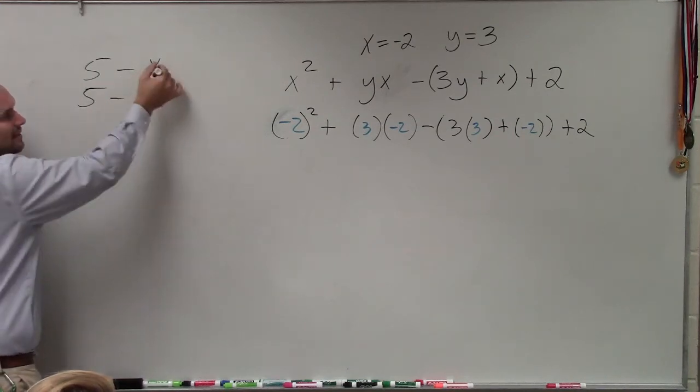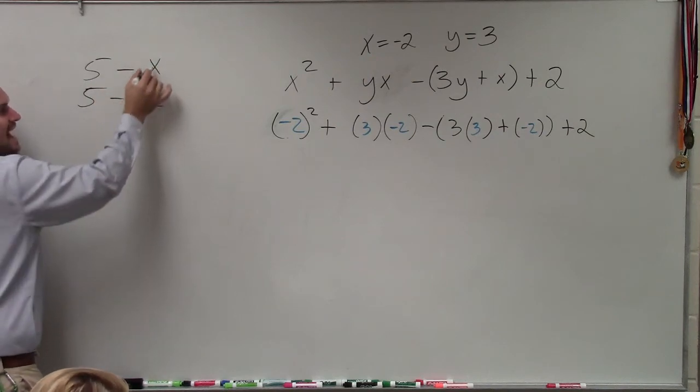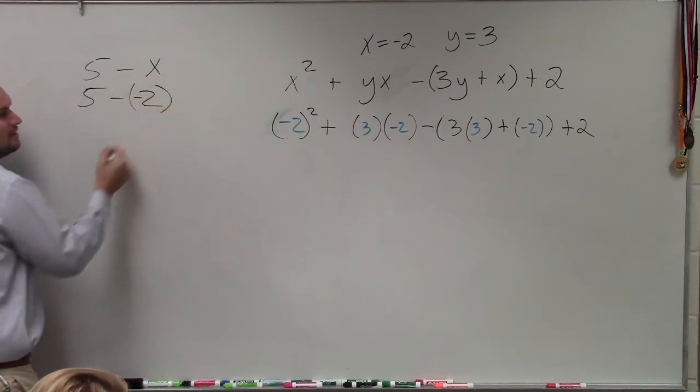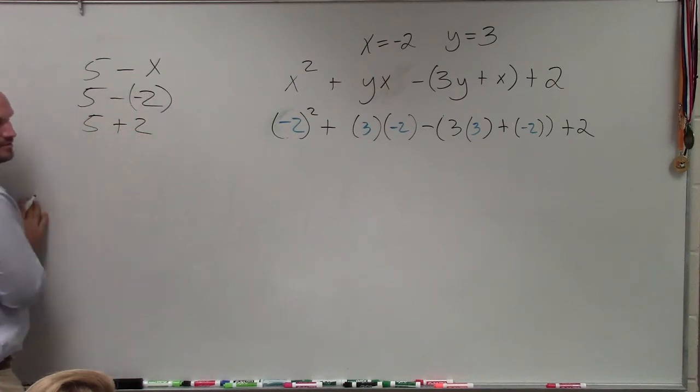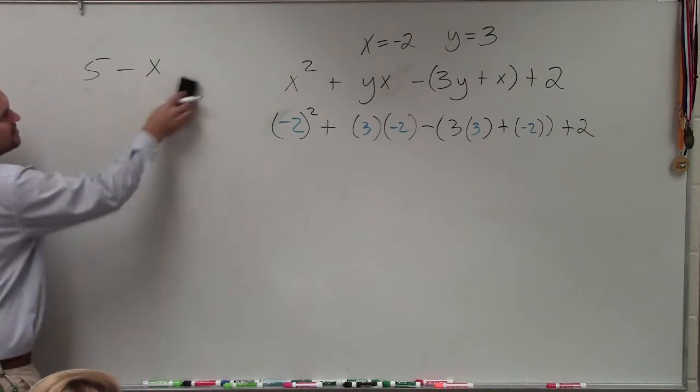You've got to plug it in: 5 minus x, where x equals negative 2. So we have 5 minus negative 2, which becomes 5 plus 2. That's why parentheses are so important.